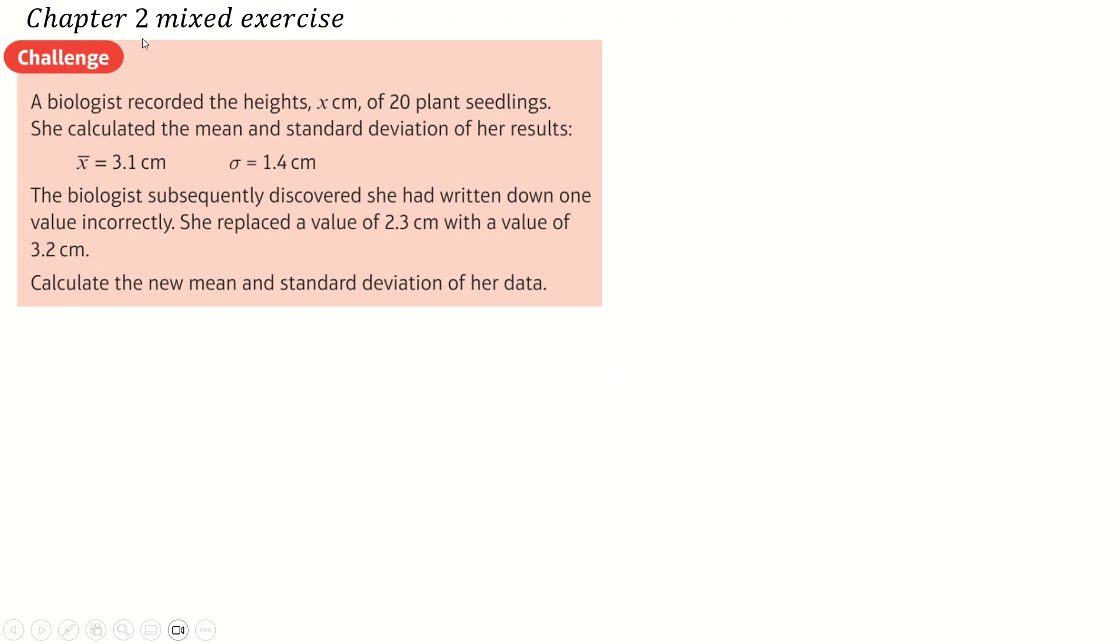The first actual challenge question we get to is the very end of chapter two, when we have to mess around with some formulas for mean and standard deviation. So we have 20 things, a mean of 3.1, standard deviation of 1.4. Apparently one of the values said 2.3, but it should have said 3.2, calculate the new mean and standard deviation.